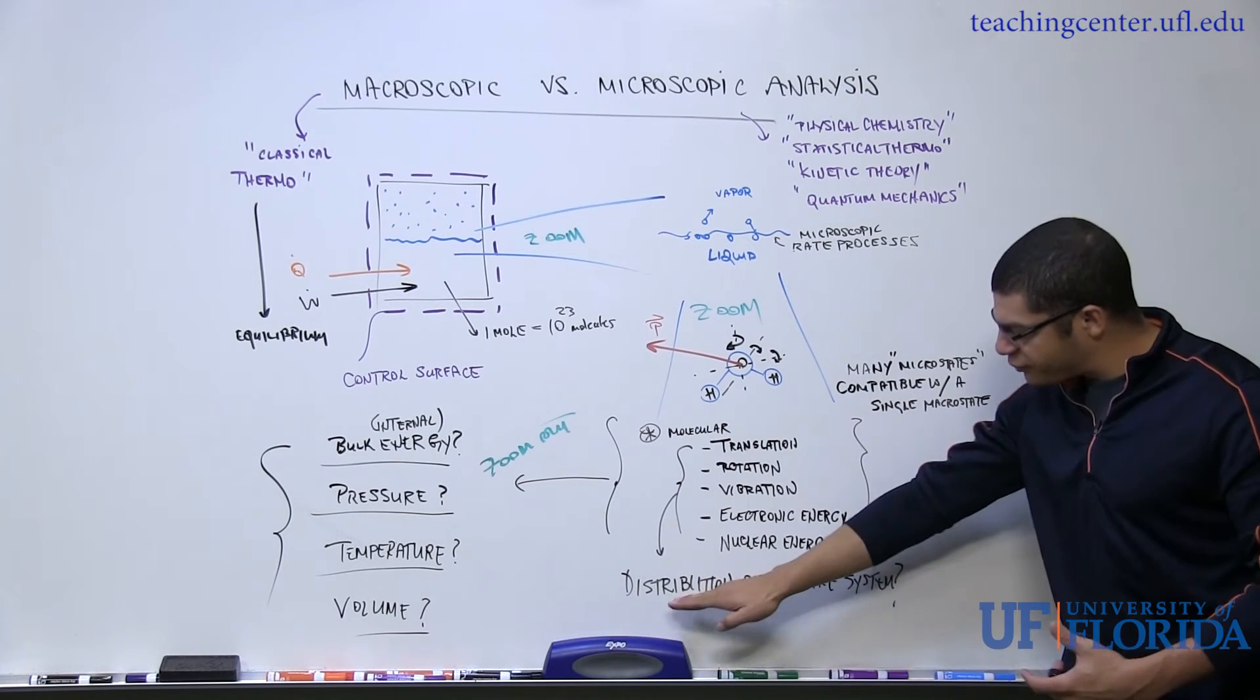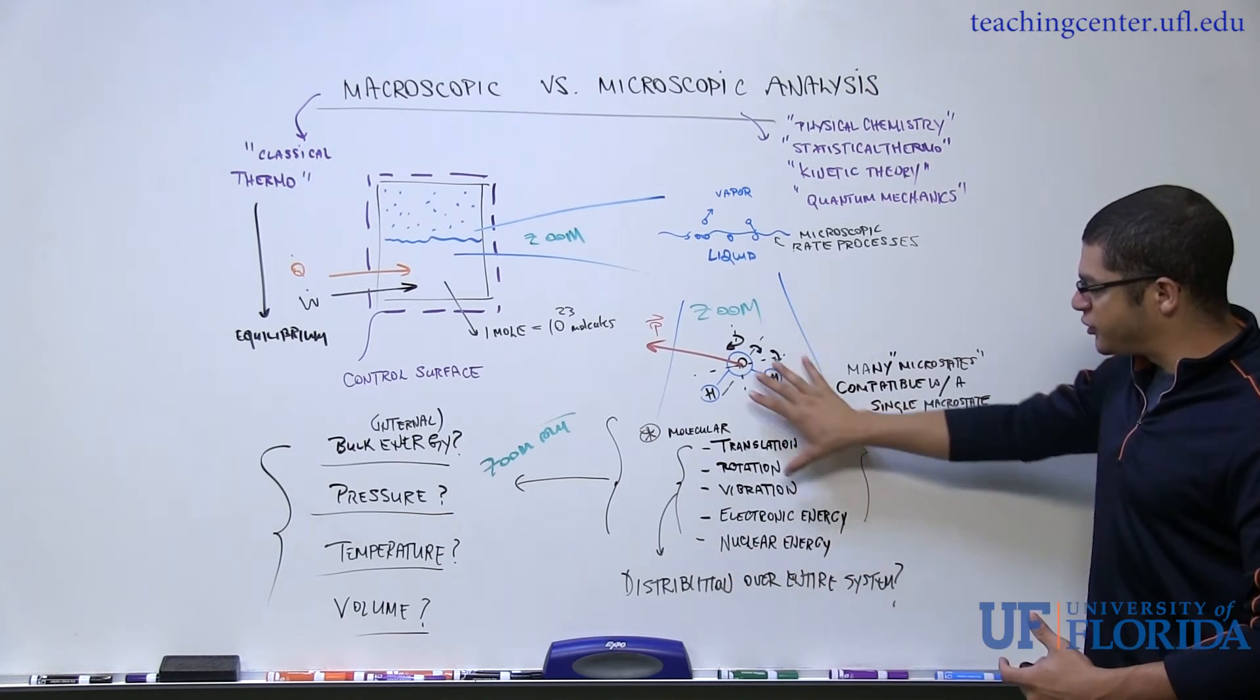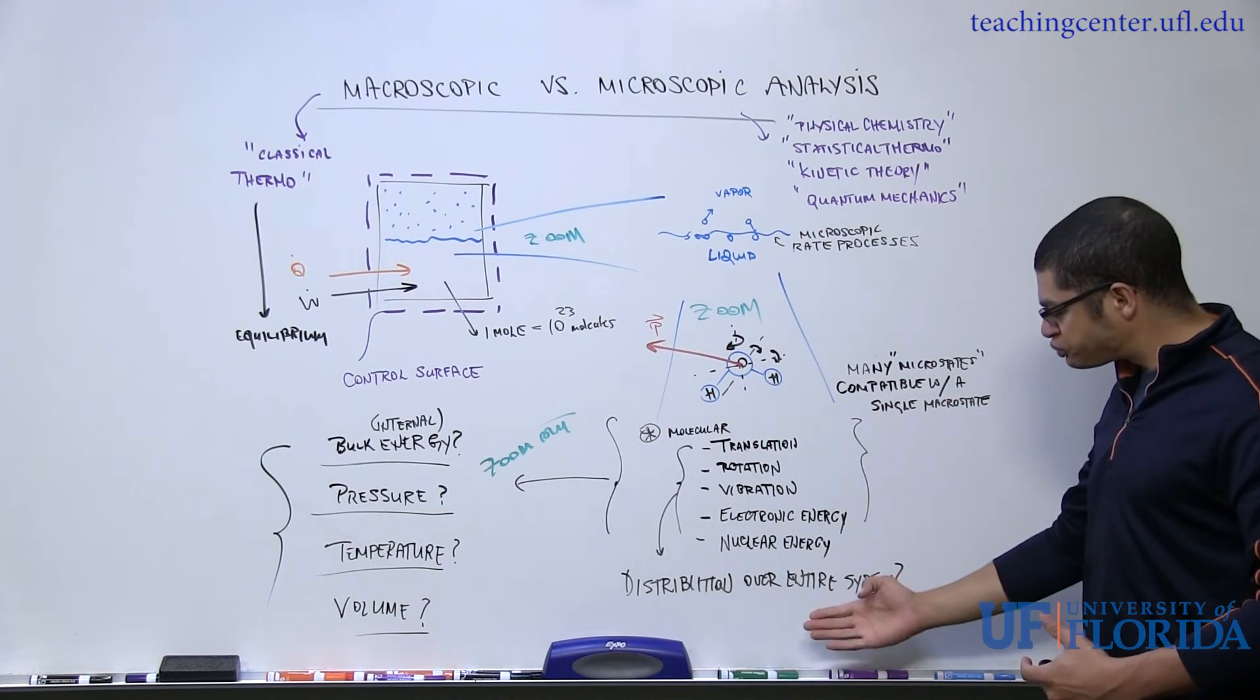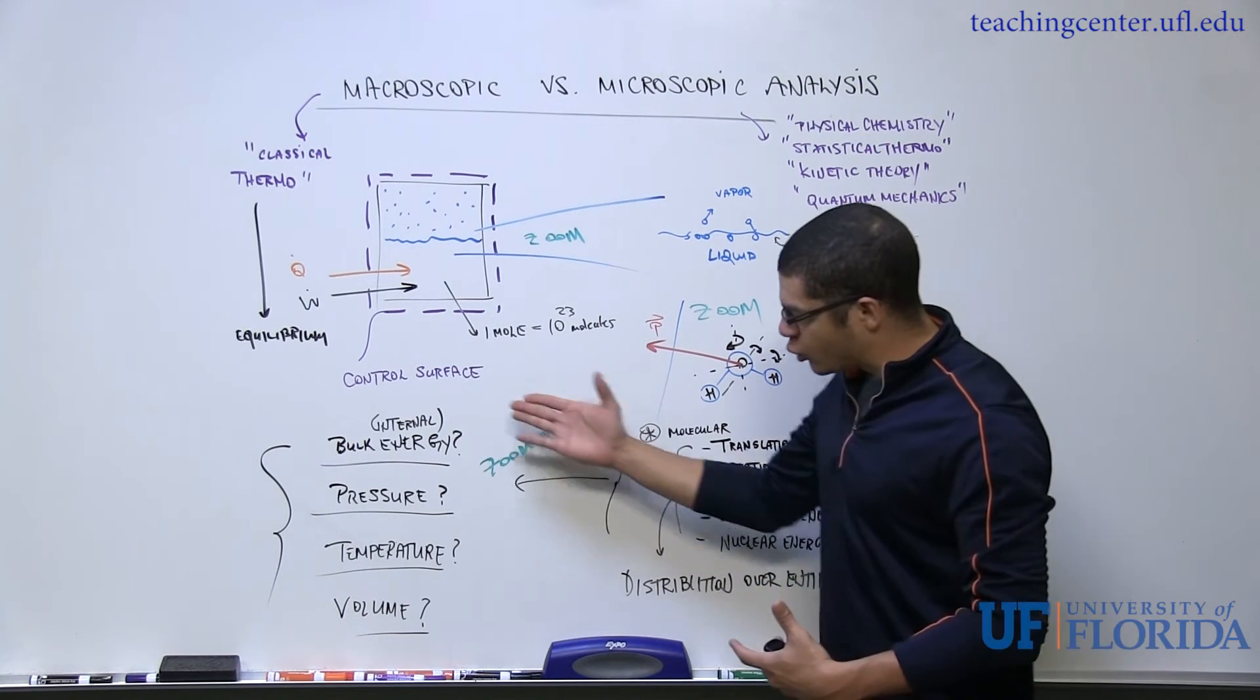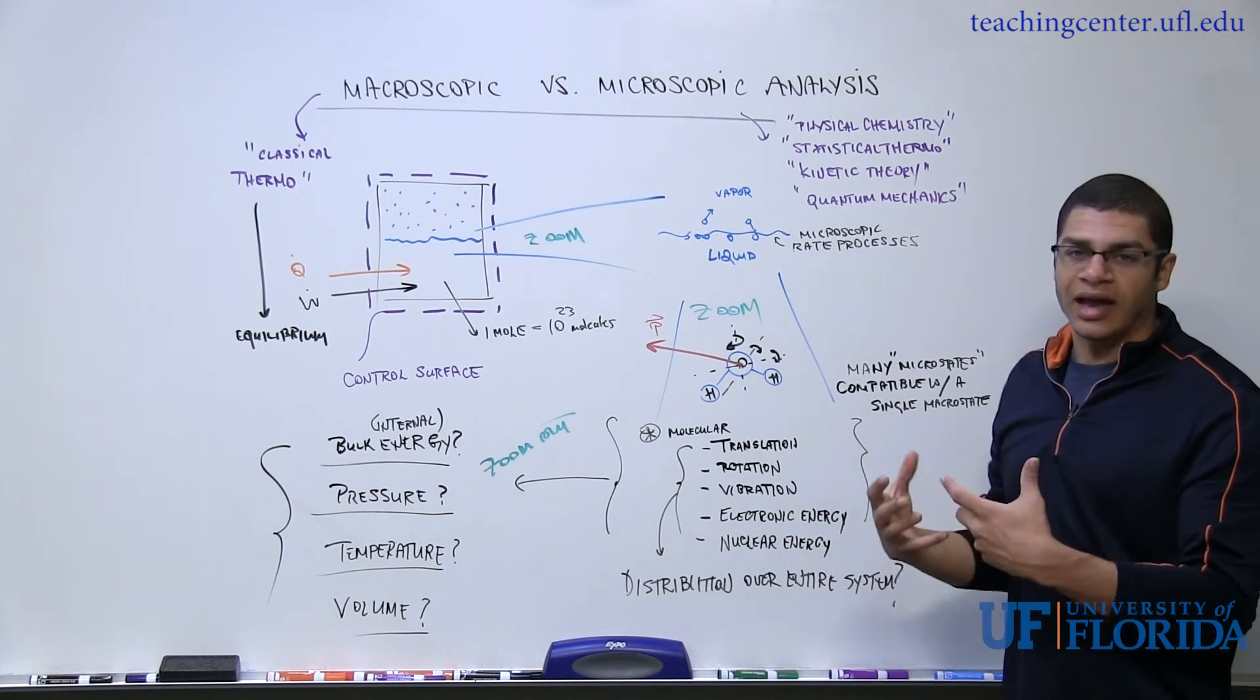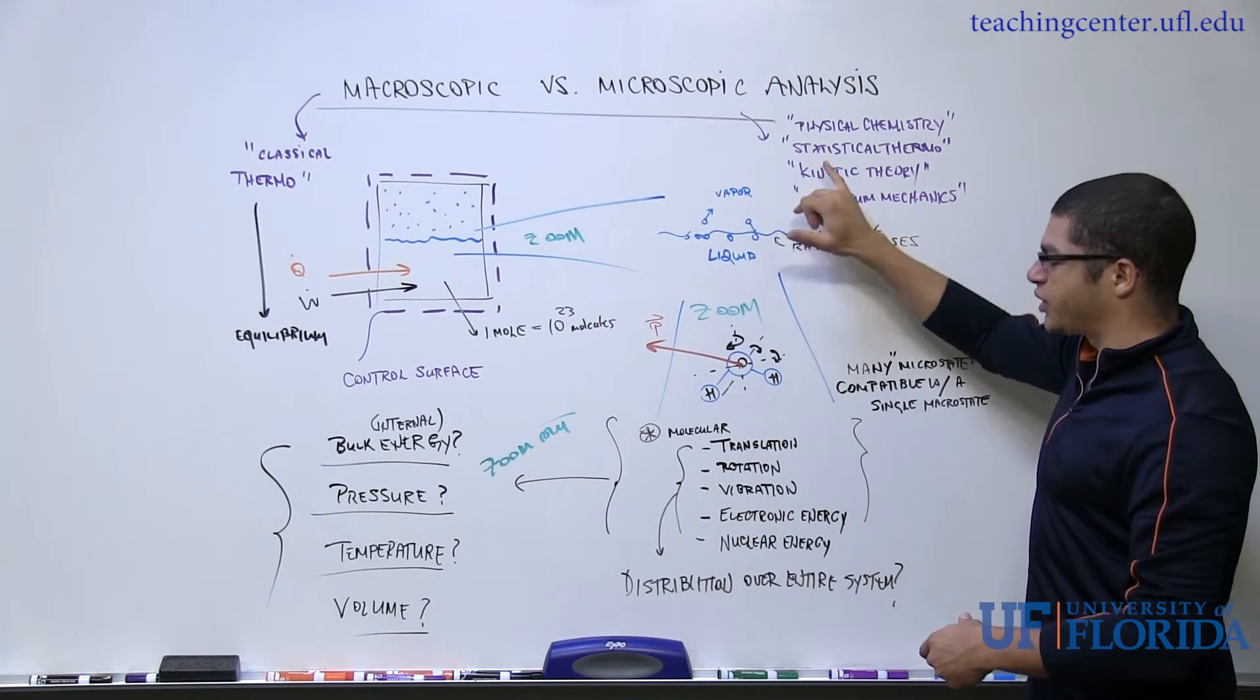If theoretically we knew something about the distribution of these molecular energies over each molecule and over all the molecules in our thermodynamic system, we could mathematically operate on that distribution and then arrive at our bulk properties. Courses like statistical thermodynamics allow us to do that, using information from both quantum mechanics and physical chemistry.